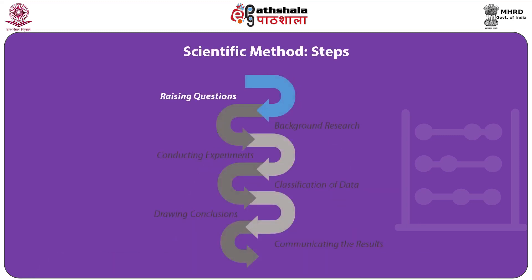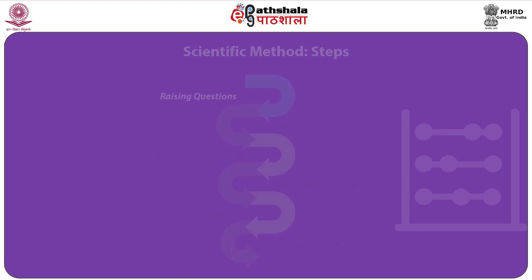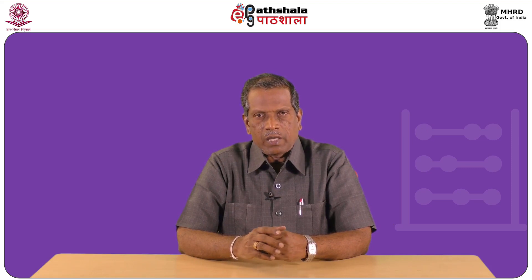Having understood the characteristics of scientific method, we now proceed to the steps in scientific method. The first step is to make an observation and raise questions. Scientists and researchers have the curiosity to study several phenomena in the world, and with a scientific mind they develop curiosity to study phenomena worth investigating. They then raise research questions about what they want to observe: how, what, when, who, which, why, or where.